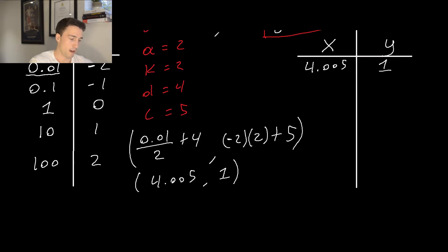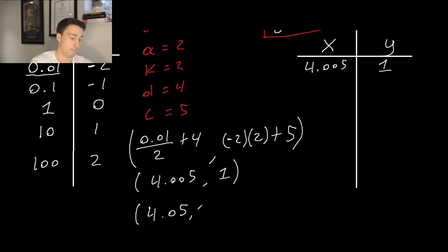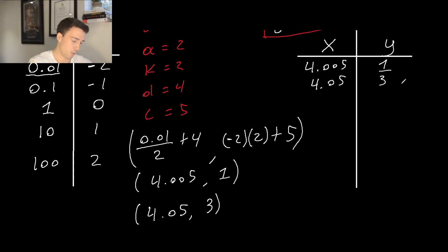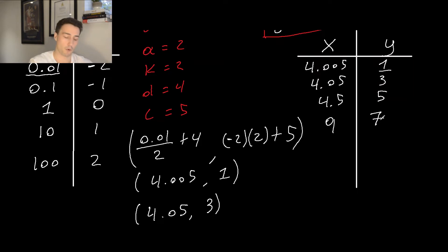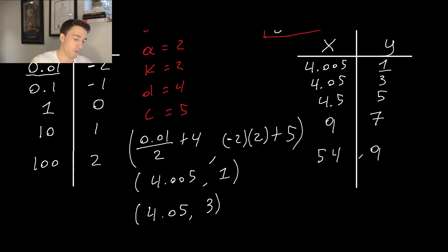Continuing: for parent point (1, 0), x becomes 1/2 + 4 = 4.5, and y becomes 2 × 0 + 5 = 5, giving (4.5, 5). For (10, 1): x is 10/2 + 4 = 9, y is 1 × 2 + 5 = 7, giving (9, 7). For (100, 2): x is 100/2 + 4 = 54, y is 2 × 2 + 5 = 9, giving (54, 9). We've taken our parent function points and applied all the transformations to each one. Connect the points and that's the graph of the transformed function.